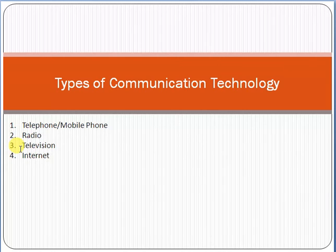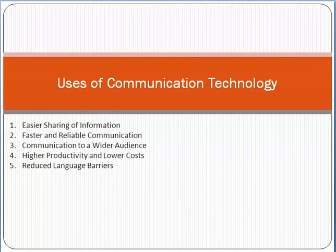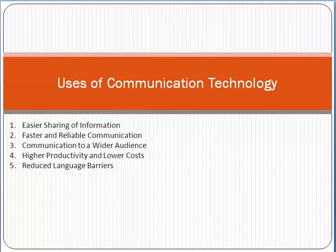The uses of communication technology: first, it is very easy to share information. For example, you can use a WhatsApp group, send emails, or use Microsoft Teams or Zoom to share information very easily. It is also very fast and reliable — by sending emails, you can transmit information from one location to another within seconds, much faster than manual transfer of information.